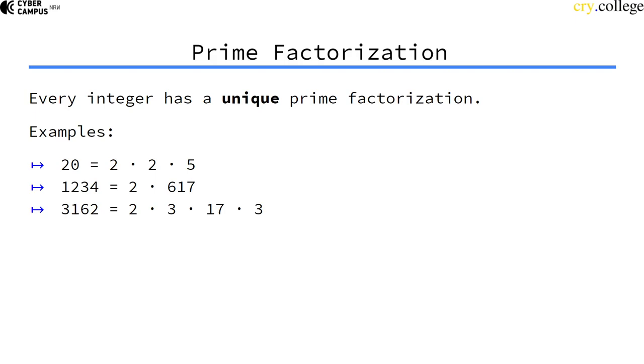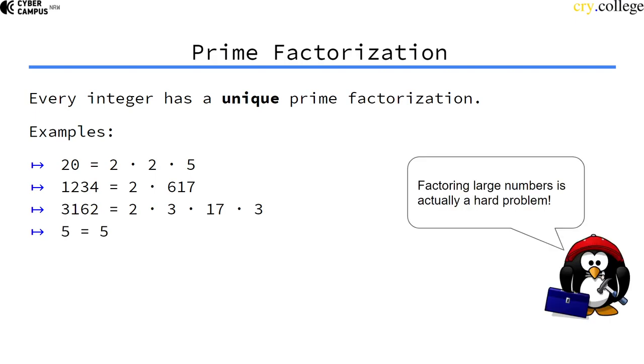For example, the prime factorization of 20 is 2 times 2 times 5. Or 1234 can be factored into 2 and 617. The prime factor of 5 is just 5 because it's already a prime number.